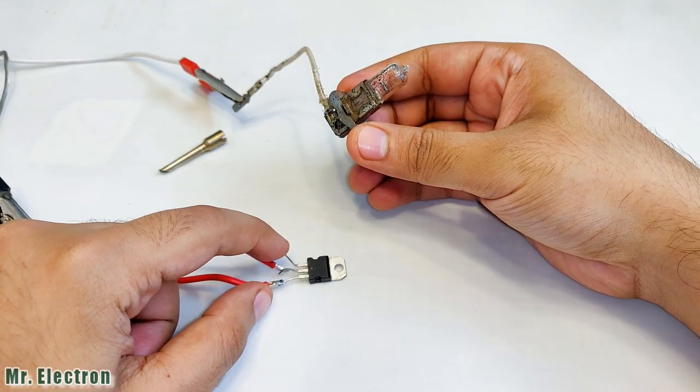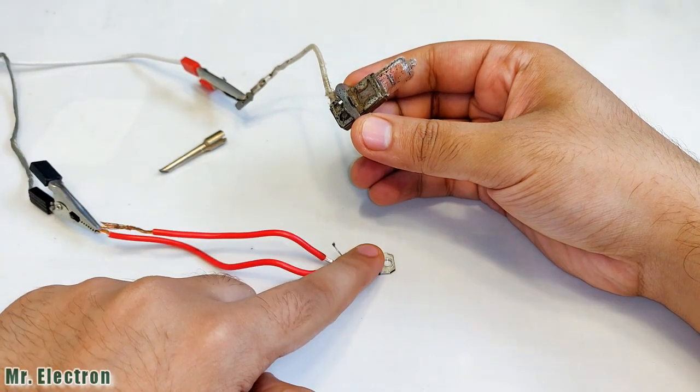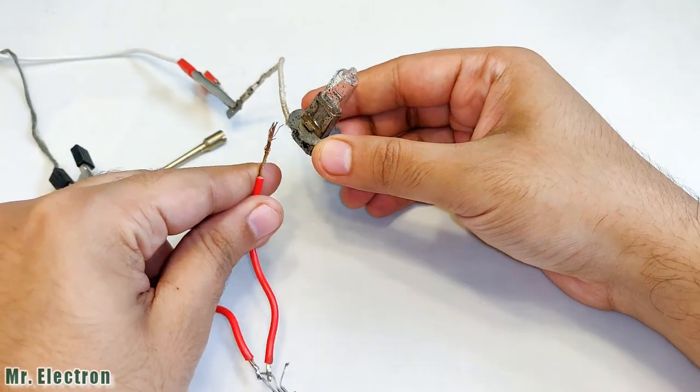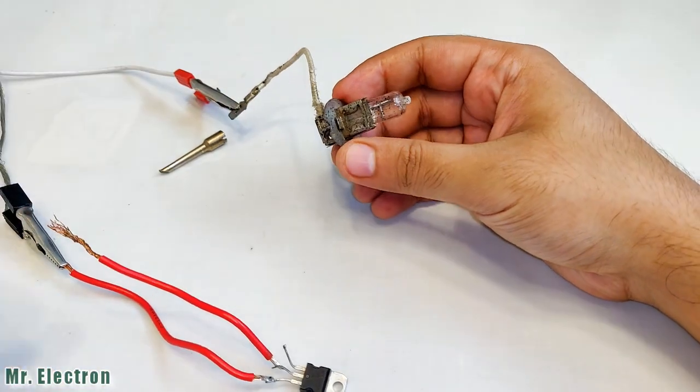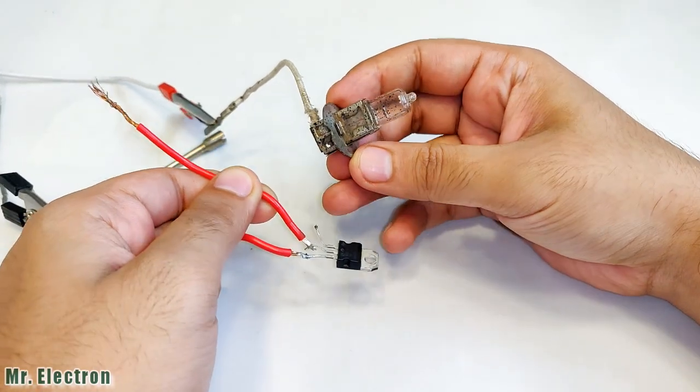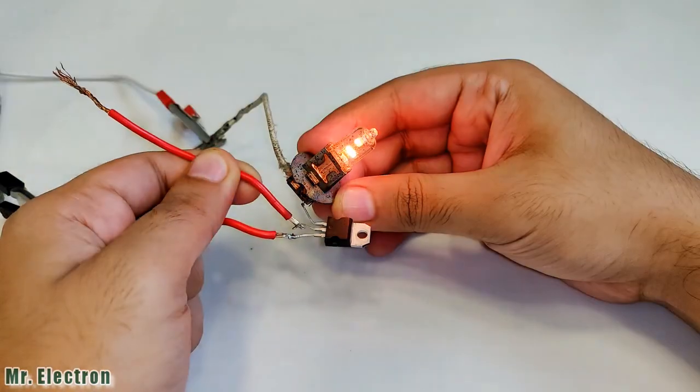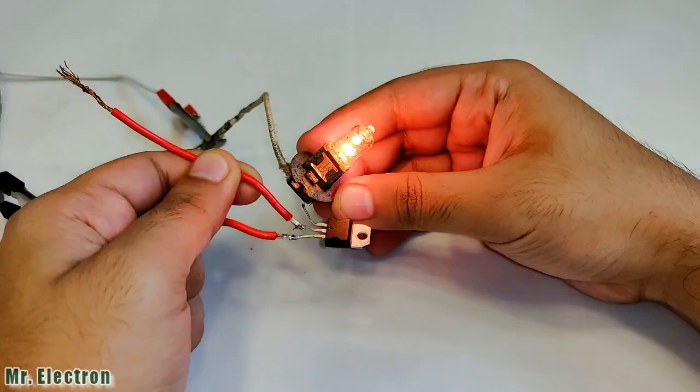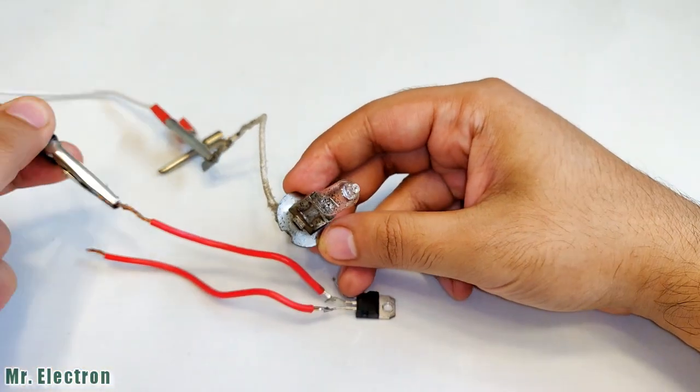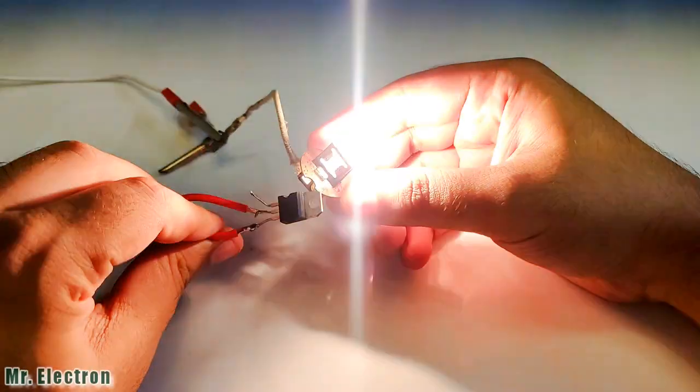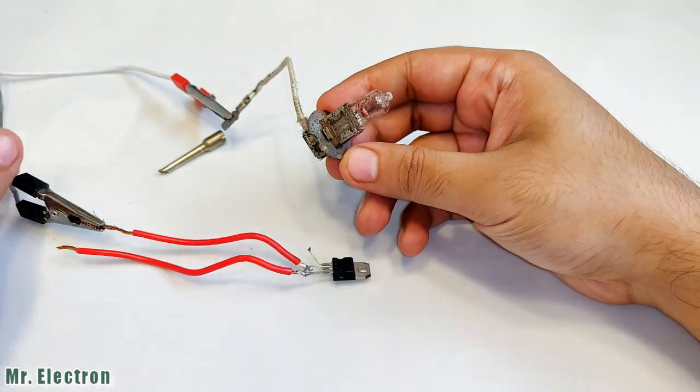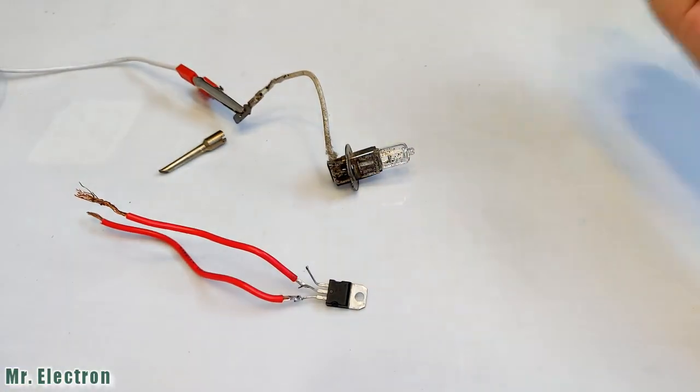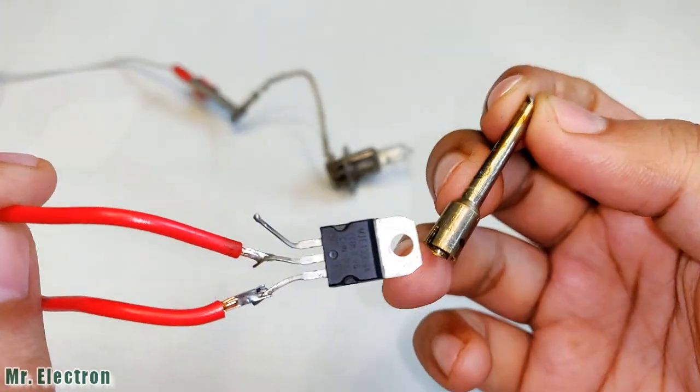This means it's a short circuit. You see it's lighting up equally well. What about the collector and the base? It's again short. The power transistor is completely dead and shorted. So let's try and make a soldering iron with it.